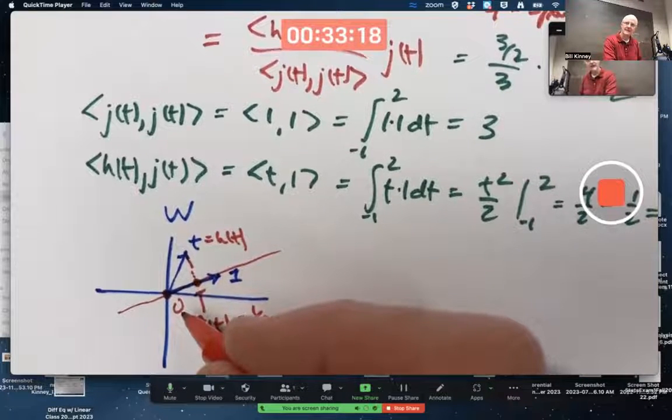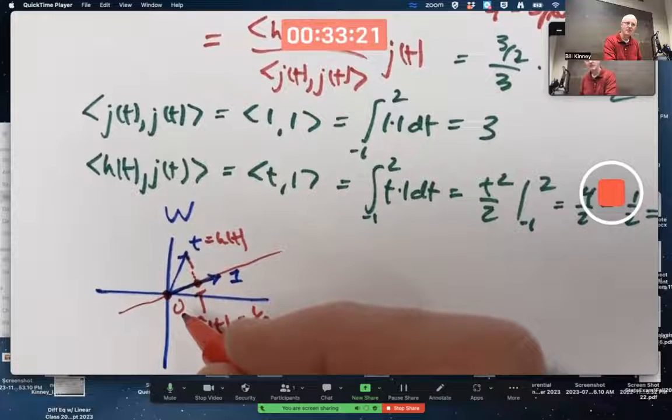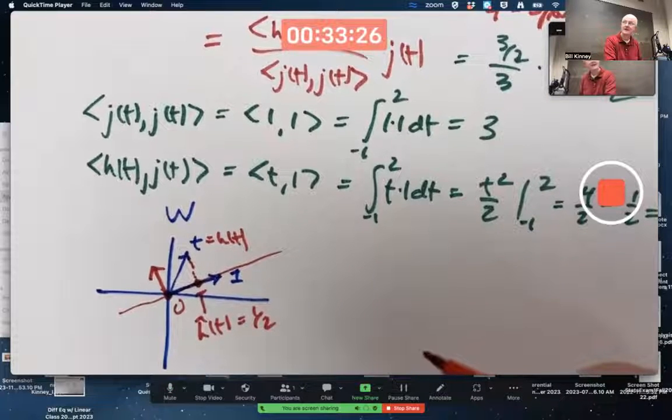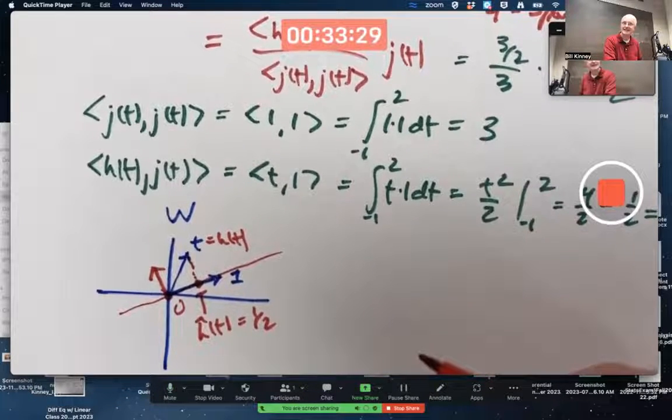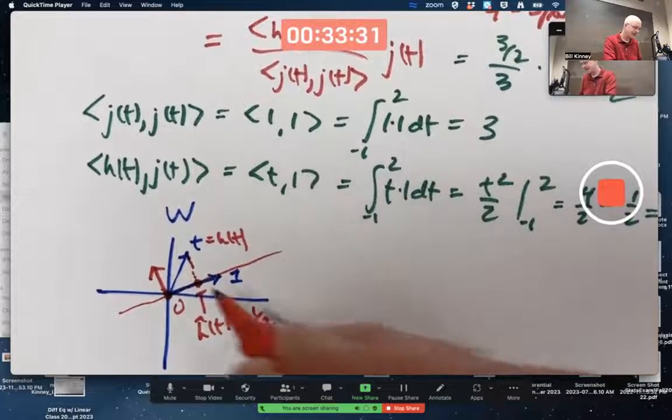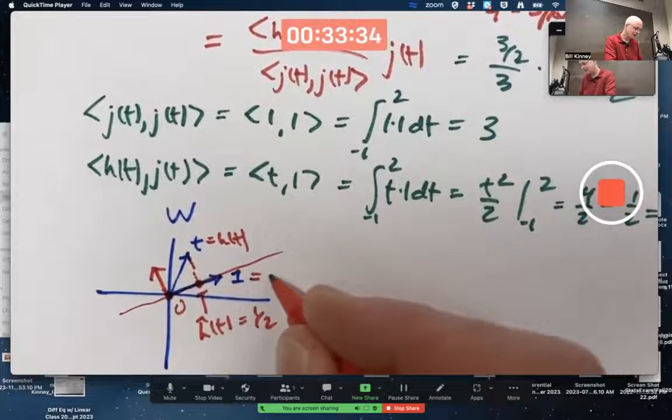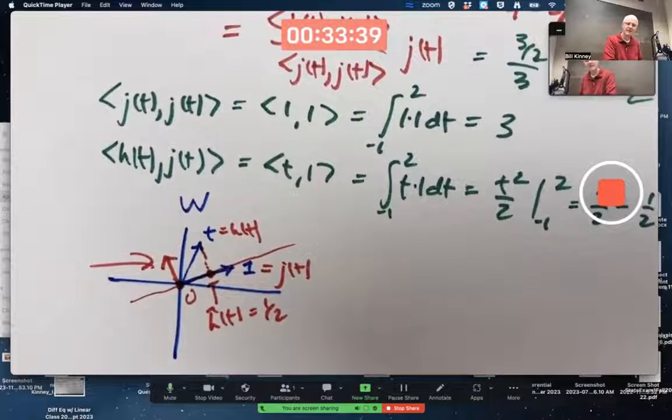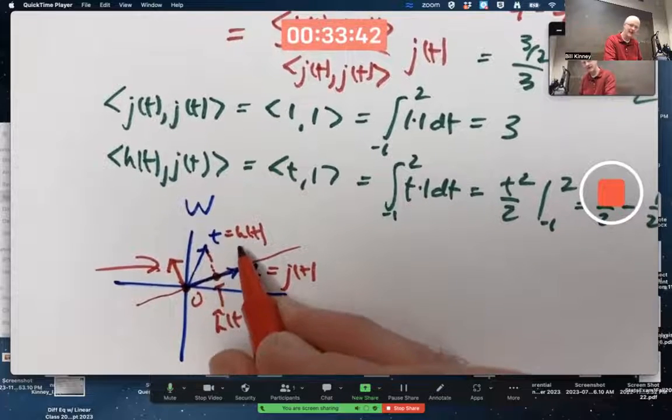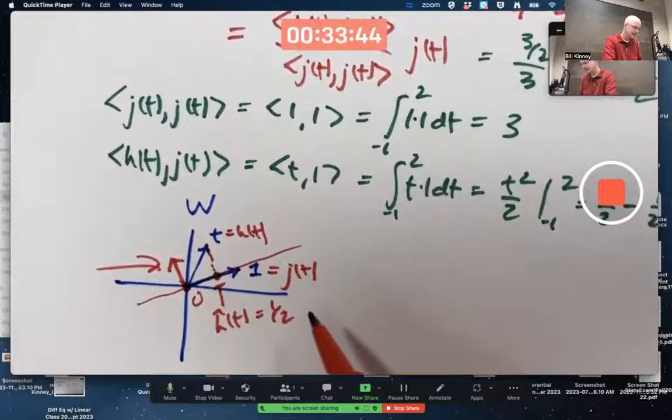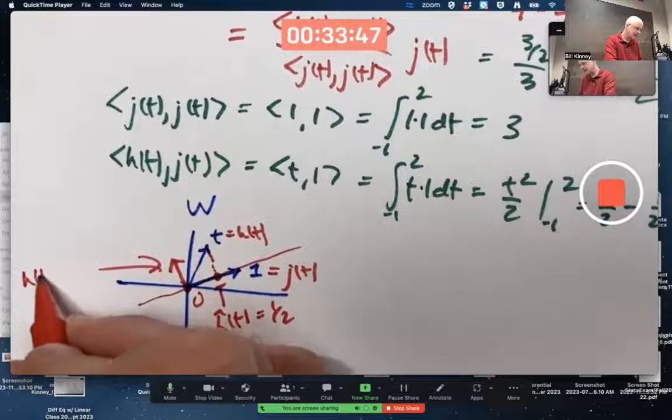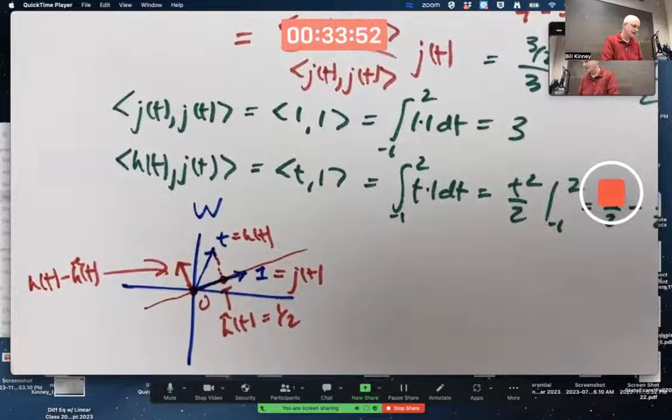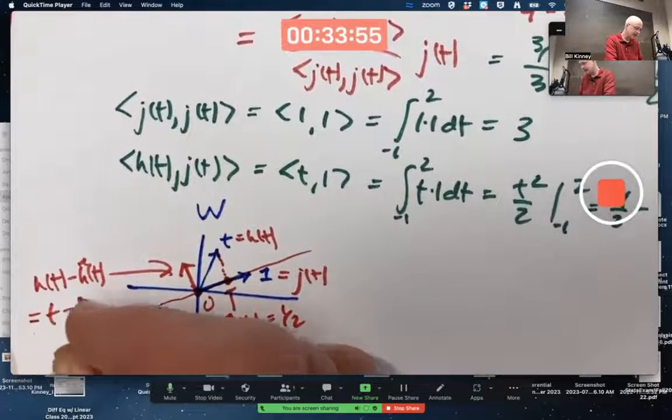And after an orthonormal basis, I haven't completed the Gram-Schmidt process yet. I need to figure out this vector right there. And then I need to normalize as well. I'm not done. What's that vector? So one is J of T. There's H hat. By analogy, just like you did on the exam, I want this vector plus H hat to equal H. So that vector right there better be H of T minus H hat of T. In other words, it's not a constant function. It's T minus one half.